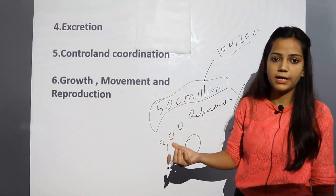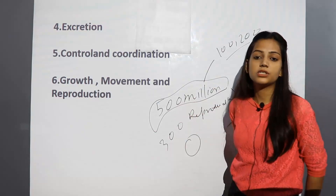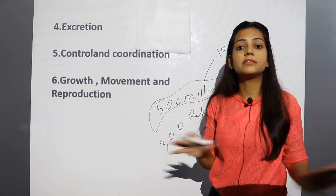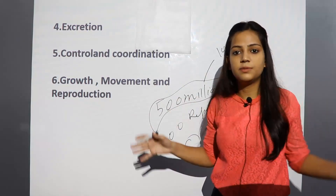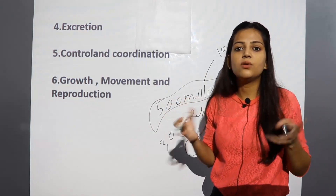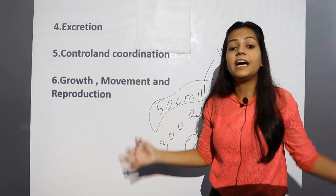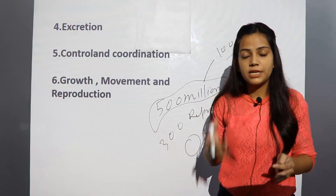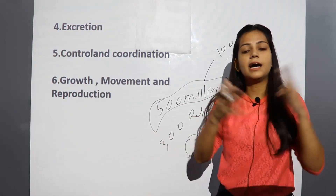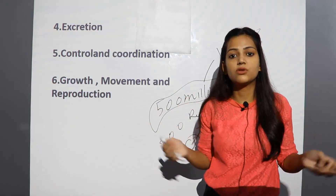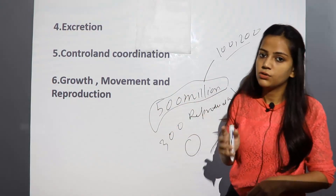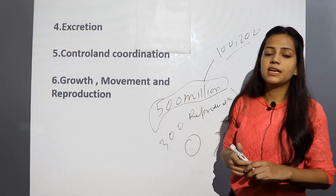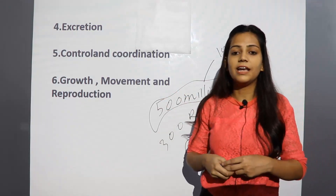If reproduction does not happen, the whole human population would become extinct. Similarly, if reproduction does not happen across the entire earth, the diversity of life you see would not exist. Reproduction is the reason you can see so much diversity and so many species. So these are our basic functions or processes which are included in life processes.